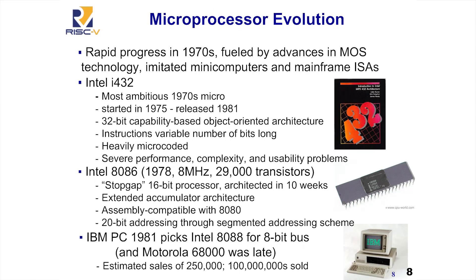In 1978, x86 wasn't that popular — Motorola had a more attractive instruction set. But Motorola was late. IBM, wanting to enter the home marketplace, started a project in Florida to build a personal computer announced in 1981. They wanted Motorola's microprocessor but it wasn't ready, so they picked the 8088 instead. IBM thought the PC might sell 200,000 units. Instead, it sold hundreds of millions. IBM's choice of x86 made this architecture the most popular in the world.